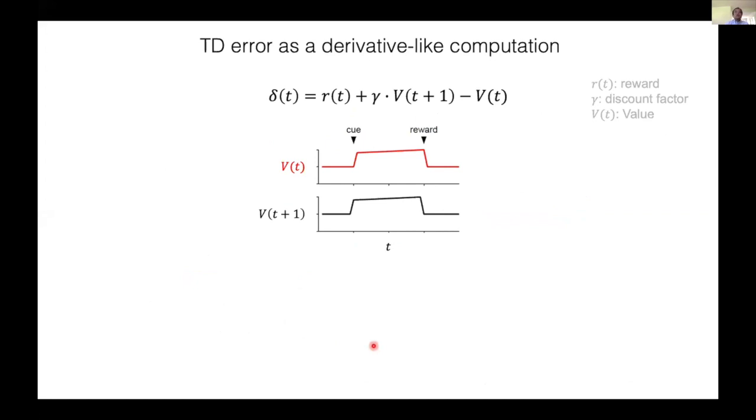Here is an intuitive way to understand TD errors. In a simple classical conditioning paradigm, when the cue is presented, value goes up because now the animal knows that the reward is coming in the future. When the time passes beyond the time of reward, value goes down because the animal doesn't know when the next reward is going to come. The V of t plus 1 is just a temporally shifted version of V of t. Therefore, subtracting between the two will give this transient excitation or transient inhibition when the value goes up or down.